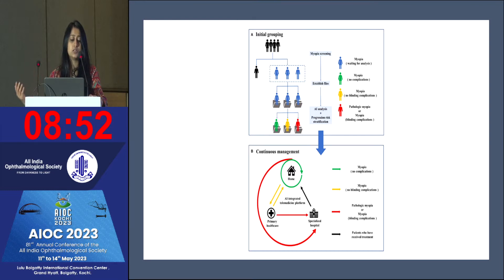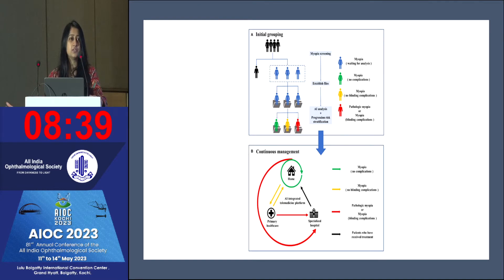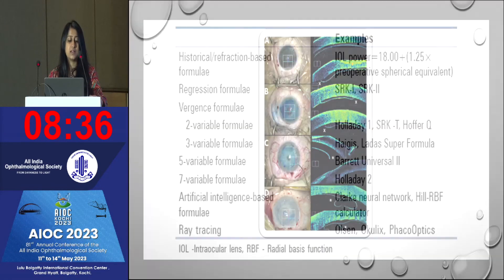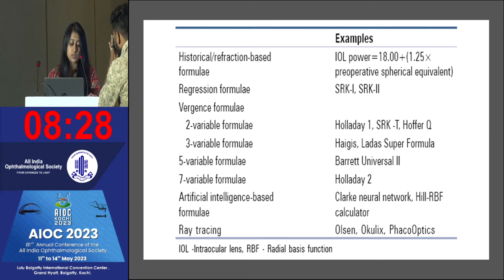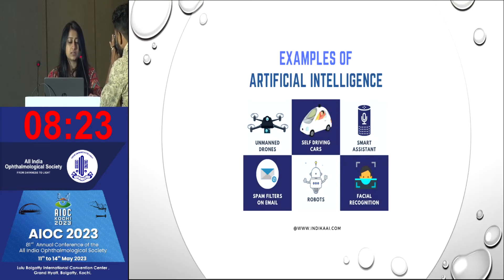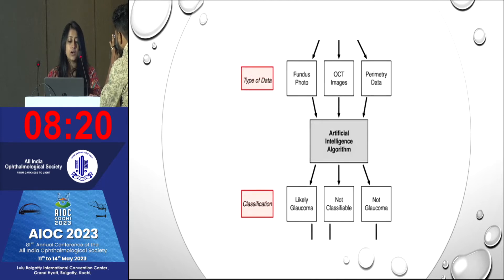For refractive error like myopia, myopia screening is done, files are established, AI analysis performed, progression risk stratification done, and then there's continuous management — the patient keeps getting AI-based analysis. Multiple formulas are required, and we're all aware of them. However, AI-based formulas also exist, such as the CLAP neural network or HIL RBF calculator, making IOL power calculation as easy as possible.